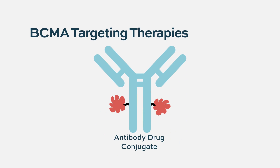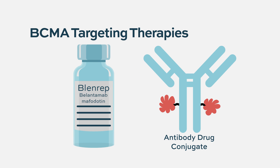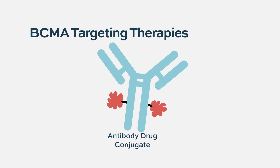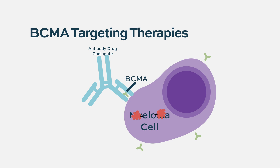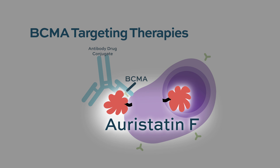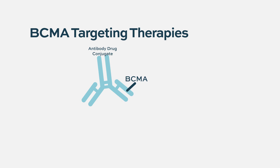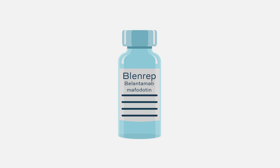One approach uses a drug antibody conjugate — specifically Blantamab, approved in 2020. It targets BCMA and brings in a drug called Aristatin F that prevents the myeloma cell from dividing. The response rate for this drug was about a third, but it is available immediately for patients needing therapy with very aggressive myeloma. The FDA later recommended withdrawal of the marketing application for Blantamab mafodotin after findings did not meet accelerated approval requirements, though it is still being studied in combination therapy in clinical trials with promising results.